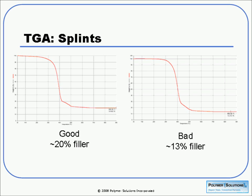Because this was mineral filled, we ran TGA as well. The good sample showed about 20% filler, while the bad sample had only about 13% — a pretty dramatic difference. So between showing that there were different crystallinity levels and different filler levels, we concluded that different recipes were indeed being used. Our customer was then able to go back to the compounder and get a solution to this problem, so that they could make better splints in the future.